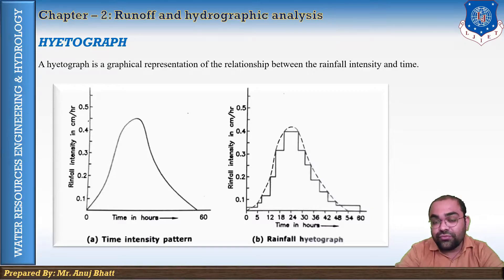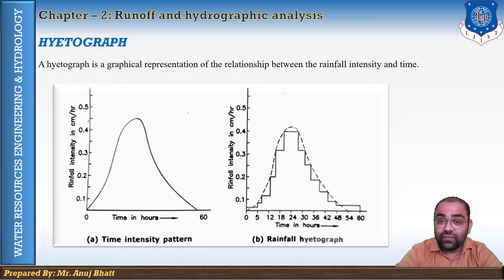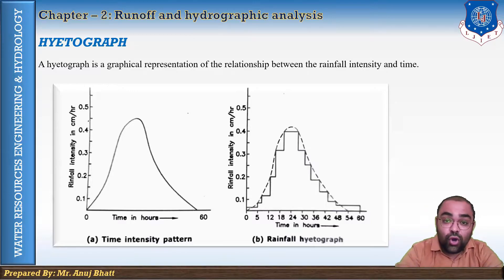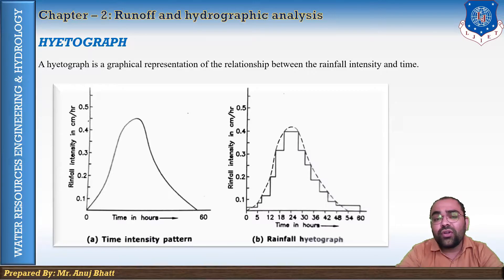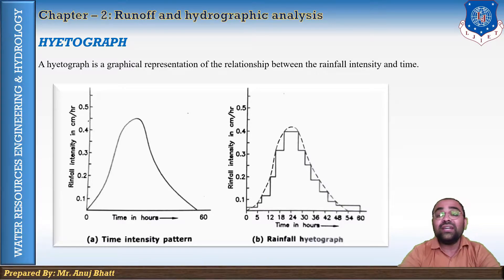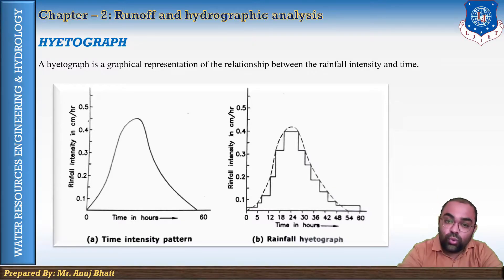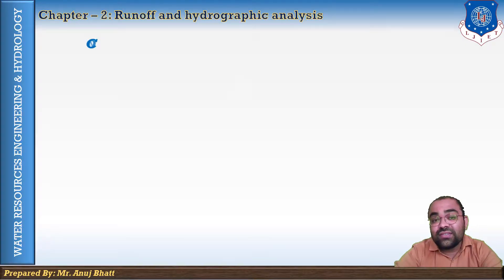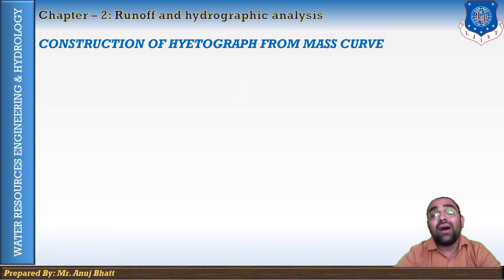The time interval chosen for this graph depends upon the required accuracy and the storm duration. Storms of short duration are usually analyzed for an interval of one hour or sometimes less. For storms of longer duration, the interval may be taken as six hours, twelve hours, or sometimes more.